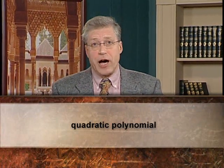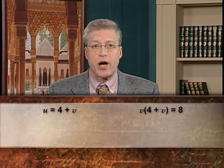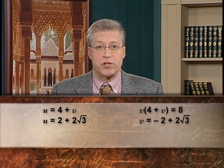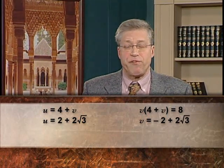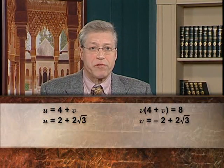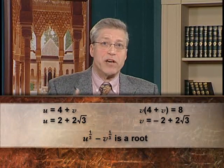This is an old problem going back to the Babylonians: knowing the difference and the product of two numbers, find the numbers. That can be restated as solving a quadratic polynomial, for which we know the exact solution. In this case, the two numbers whose difference is 4 and whose product is 8 are (2 + 2√3) and (−2 + 2√3). Taking the difference of their cube roots gives a root of the original cubic equation.